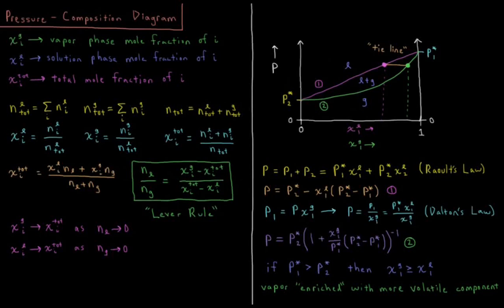This video will discuss the pressure-composition diagrams of binary mixtures of solutions. Moving on with the concept of mole fraction, we can define χᵢᵍ as the mole fraction of component i in the vapor phase, χᵢˡ as the mole fraction of component i in the solution or liquid phase, and χᵢᵗᵒᵗᵃˡ as the mole fraction of i in all phases combined. So in the liquid plus vapor phase, what is the total mole fraction of i?